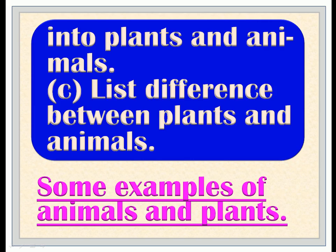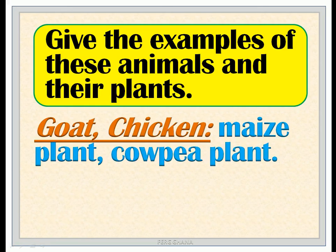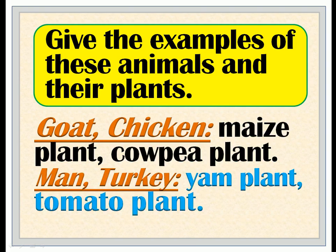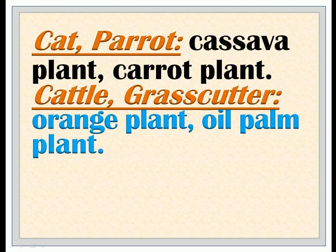Some examples of animals and their corresponding plants: man, goat, chicken — their plants are maize plant and cowpea plant. Man, turkey — their plants are yam plant and tomato plant. Cat, parrot — their plants are cassava plant and carrot plant. Cattle, grass cutter — their plants are orange plant and oil palm plant. Pig, snake — their plants are coconut plant and mango plant.